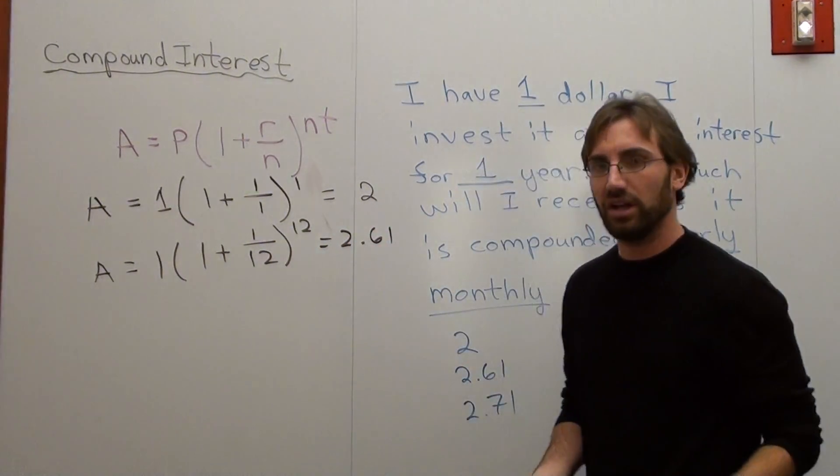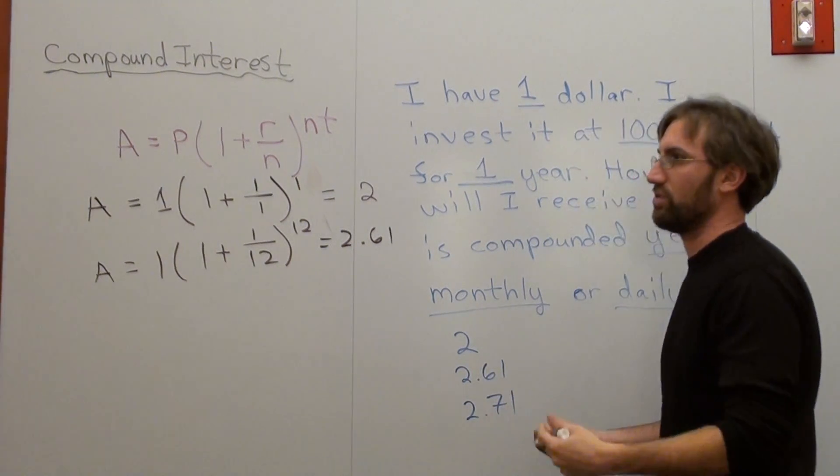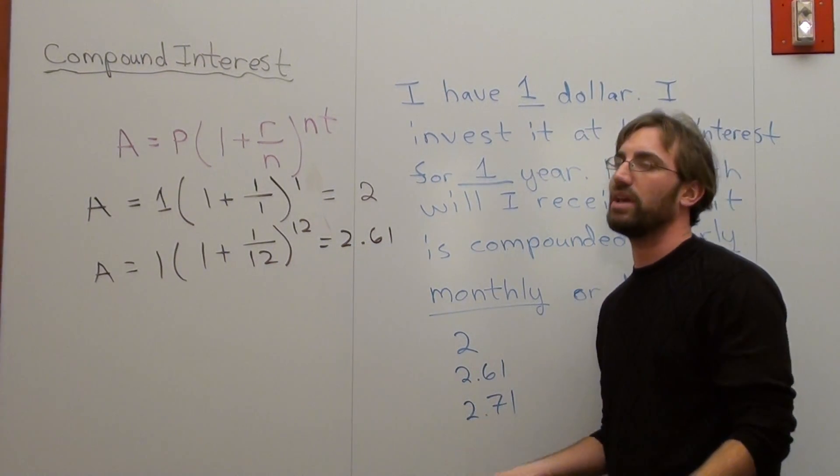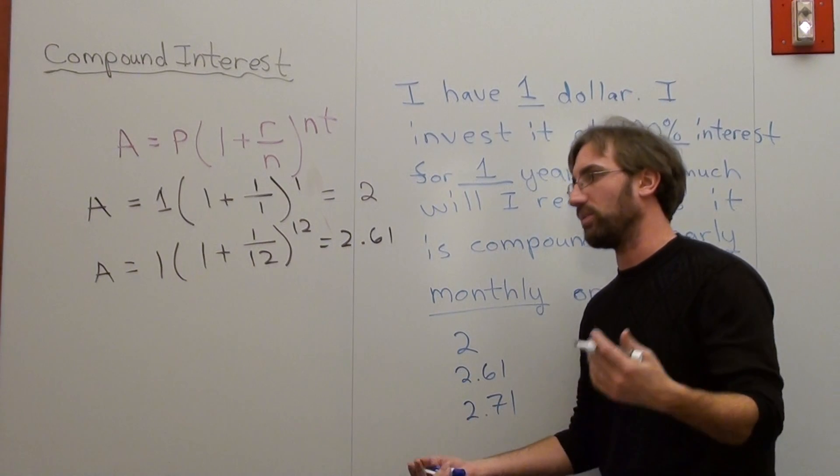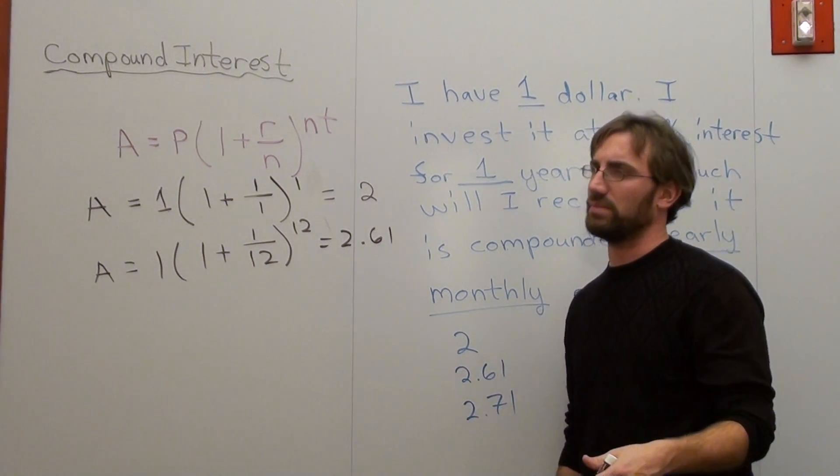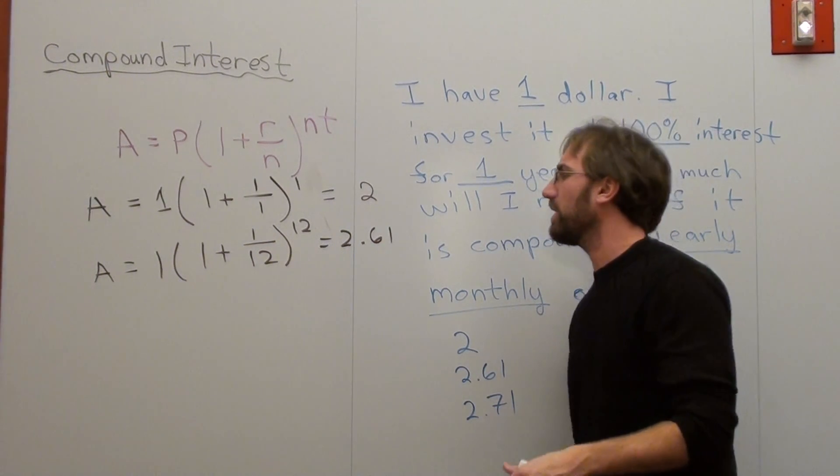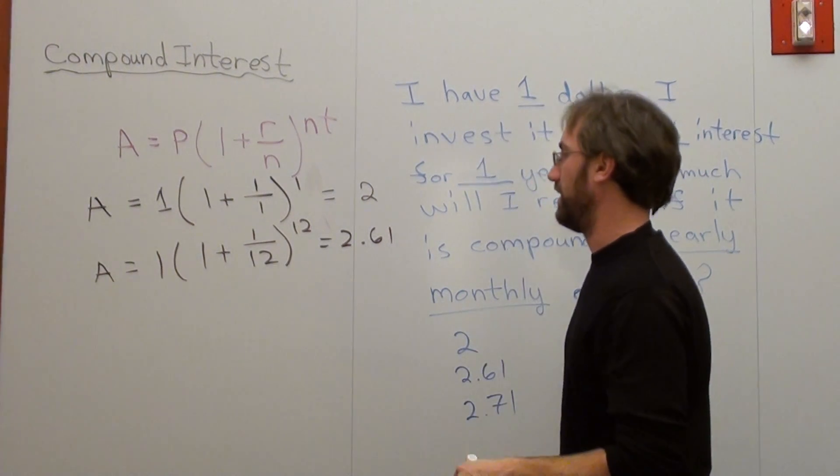If you compound it more often, you get more money. Hence, if you compound it continuously, you get the most. But it's not that much. It's like 2.718, which is 2.7. It's whatever e is. I can't remember e off the top of my head.